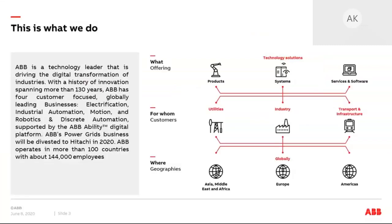ABB is a technology leader driving digital transformation of industries with a history of innovation spanning more than 130 years. ABB has four customer-focused businesses: Electrification, Industrial Automation, Motion, and Robotics and Discrete Automation. The products we are going to show you today belong to the Electrification business, Smart Power business line.